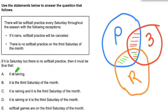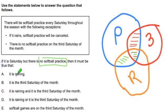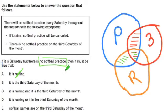Now I go through these options. What must be true if there's no practice on that Saturday? Is it raining? Well, not necessarily. It could be raining or it could be the third Saturday. So it might not be the reason practice was canceled — not because of rain, but it might've been the third Saturday. So I eliminate that one.